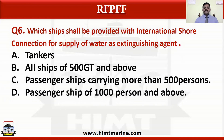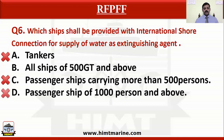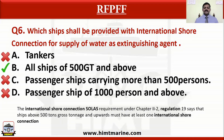Which ships shall be provided with international shore connection for supply of water as extinguishing agent? Option A tankers, option B all ships of 500 gross tonnage and above, option C passenger ships carrying more than 500 persons, option D passenger ship of 1000 persons and above. The correct answer is all ships of 500 gross tonnage and above, because according to SOLAS chapter 2-2 regulation 19, ships above 500 gross tonnage must have at least one international shore connection.